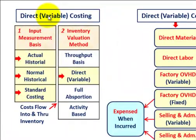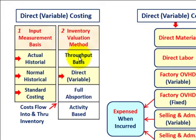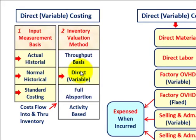What we're going to be going through here is direct or variable costing, which is an inventory valuation method used in cost accounting. We have four different inventory valuation methods, but we're going to be looking at the direct or variable costing method. Some call it direct, some call it variable — those two terms are interchangeable.